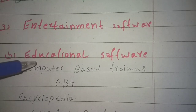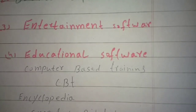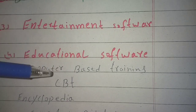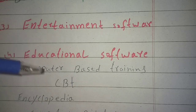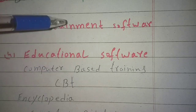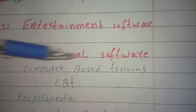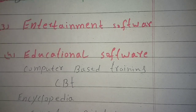Entertainment software allows a computer system to be used as an entertainment tool based on electronic software. Examples of entertainment software include media players and video games. This category is commonly used by children.